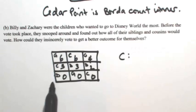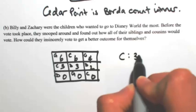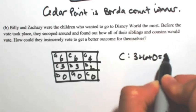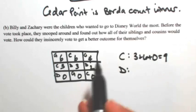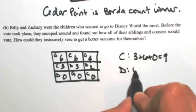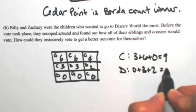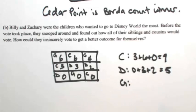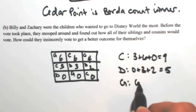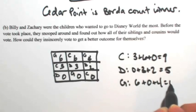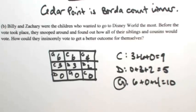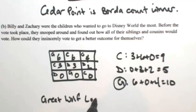Cedar Point still has 3, 6, and 0 — that's not going to change. Disney World is going to have 0, 3, and 2, so D does go down some votes. But now Great Wolf Lodge goes up: 6, 0, and 4. That makes G become the winner, which is a better outcome for Billy and Zachary. Great Wolf Lodge is now the Borda count winner.